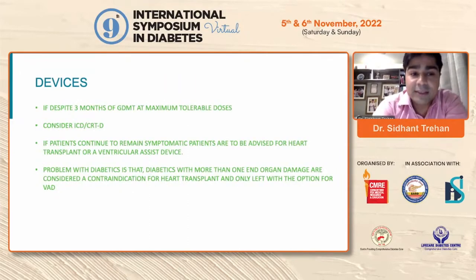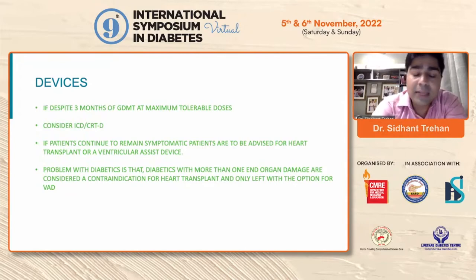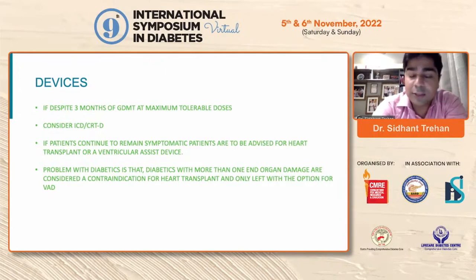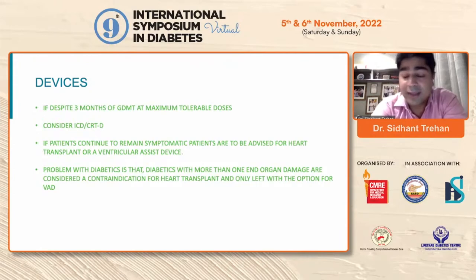Regarding devices: if despite three months of optimal medical therapy at maximal tolerable doses a patient does not have symptomatic improvement or improvement in ejection fraction, it is time to consider them for an ICD or CRT-D. If patients continue to remain symptomatic, they are to be advised for heart transplant or ventricular assist device. The problem with diabetics is that diabetics with more than one end-organ damage are considered a contraindication for heart transplant, leaving them only with the option of a ventricular assist device — therapies for which are very rare in our country, with costs ranging between 80 lakhs to 1 crore.